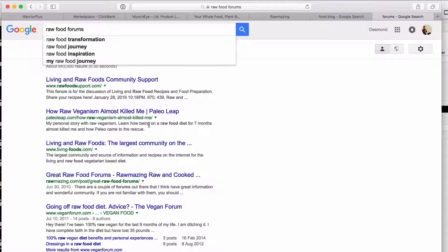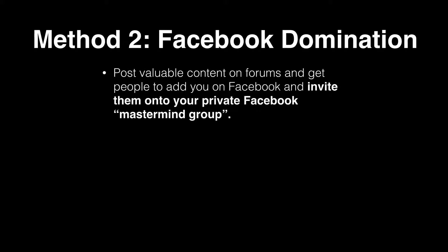You only want to be in top forums that are active with thousands of members actively sharing, because only active forums are worth your time — you want eyeballs on your content. Post valuable content on forums and get people to add you on Facebook or invite them to your private Facebook mastermind group. When you share valuable content, people start trusting and respecting you. Under your signature line, put a link to your Facebook profile or group so you can move the conversation onto Facebook where you have more control.